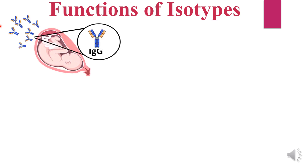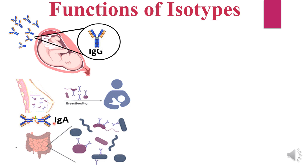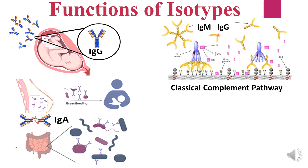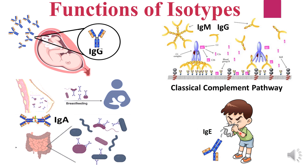The functions of the five isotypes in human beings are as follows. Immunoglobulin G can cross the placenta from mother to child and provides immunity to the newborn. Immunoglobulin A is found in secretions and protects the GI tract, the respiratory tract, and is found in breast milk to protect the newborn. Immunoglobulin M and G activate the classical complement pathway, whereas immunoglobulin E is responsible for allergic and anaphylactic reactions.